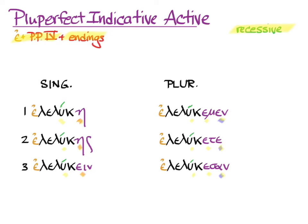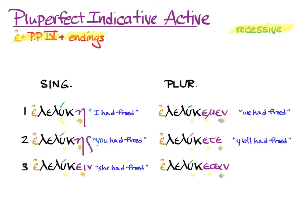This is eleluka — 'I had freed'; elelukas — 'you had freed'; elelukein — 'she had freed'; elelukemen — 'we had freed'; elelukete — 'y'all had freed'; and elelukaesan — 'they had freed.'